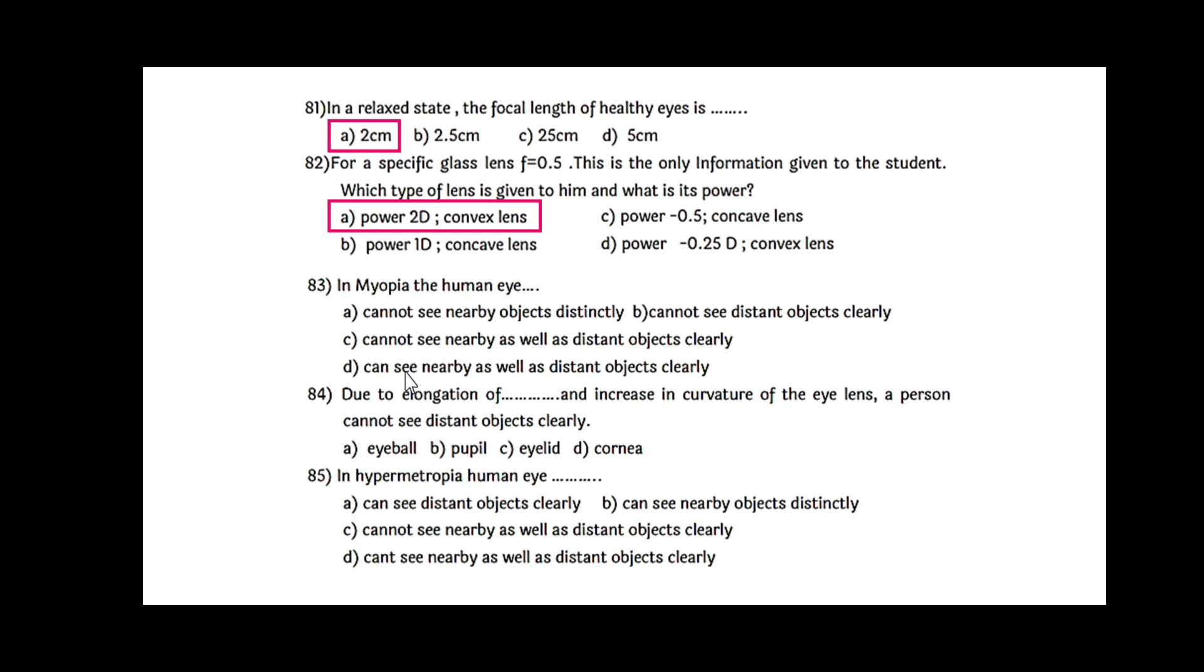In myopia, the human eye - we have 4 options. Cannot see nearby object distinctly. Cannot see distant object clearly. Cannot see nearby as well as distant. So option B is the correct one. Cannot see distant object clearly, but nearby objects could be seen. Due to the elongation of eye bone and increase in curvature of the eye lens, a person cannot see distant objects clearly.